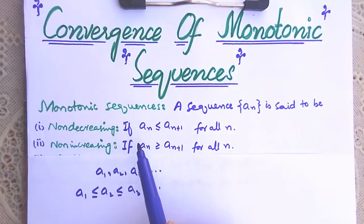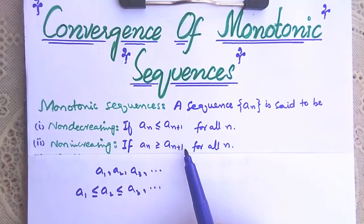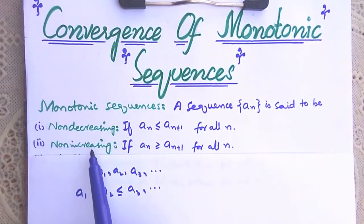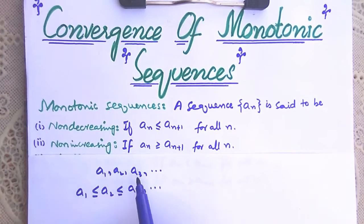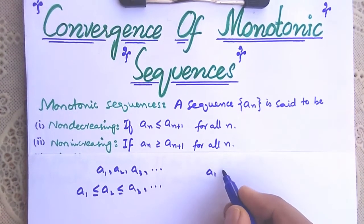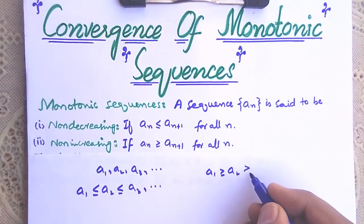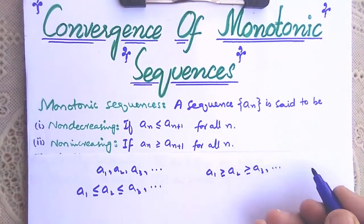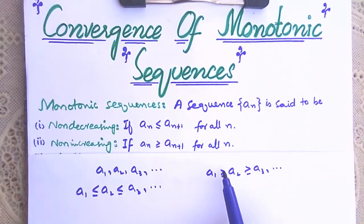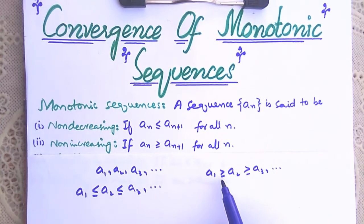Now, non-increasing: if a_n is greater than or equal to a_{n+1} for all n, then it is called a monotonic non-increasing sequence. Meaning if the sequence is in the order a1 ≥ a2 ≥ a3 and so on, then the sequence is called non-increasing — every preceding term is greater than or equal to its successive term.